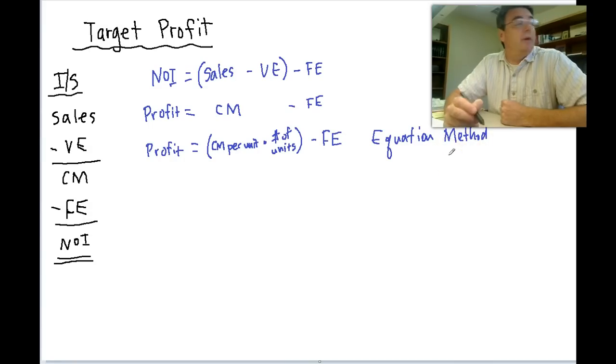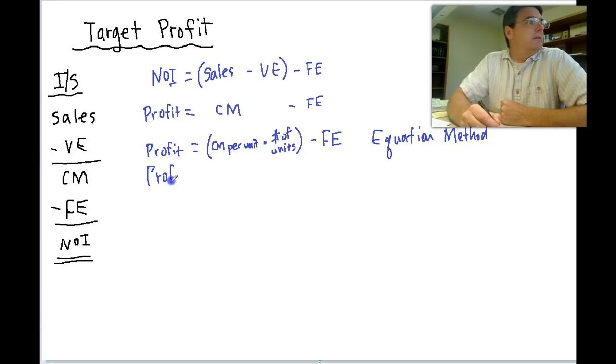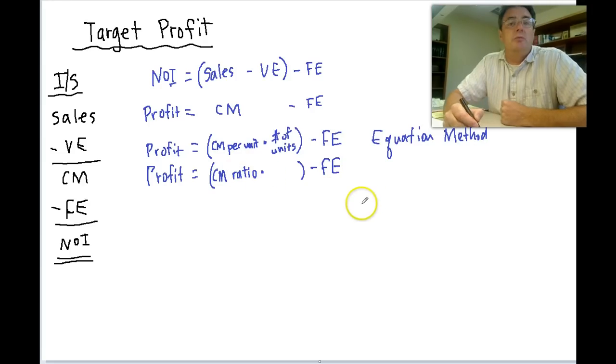Oh actually we have one more way of calculating it. We can also get a total contribution margin number by taking our contribution margin ratio. That's the third column we've been talking about. And what would you need to multiply that by to get total contribution margin? The dollars of sales.